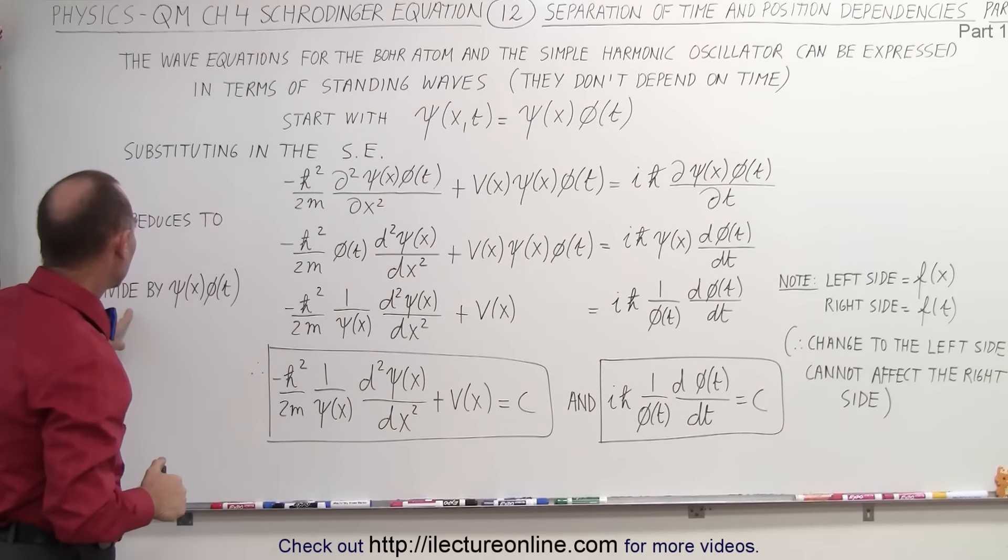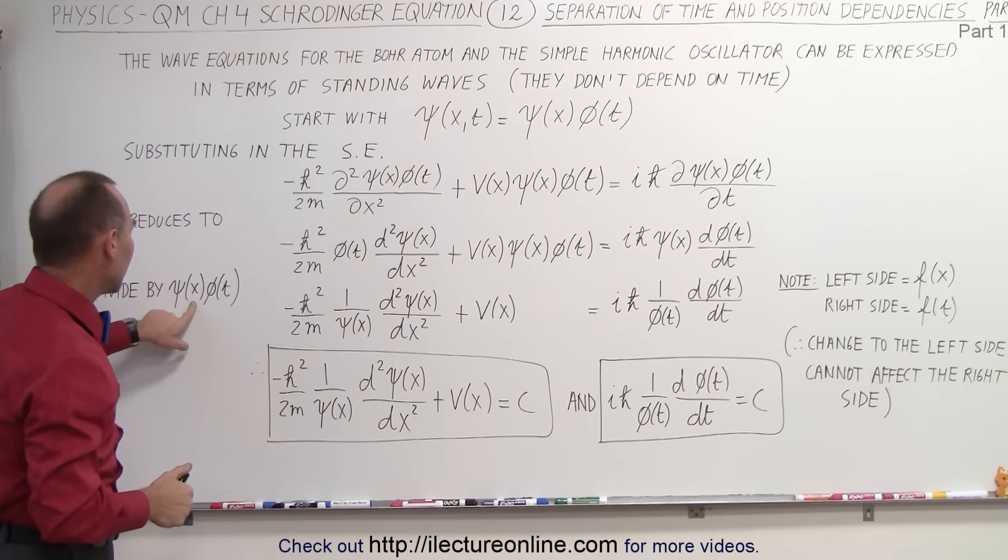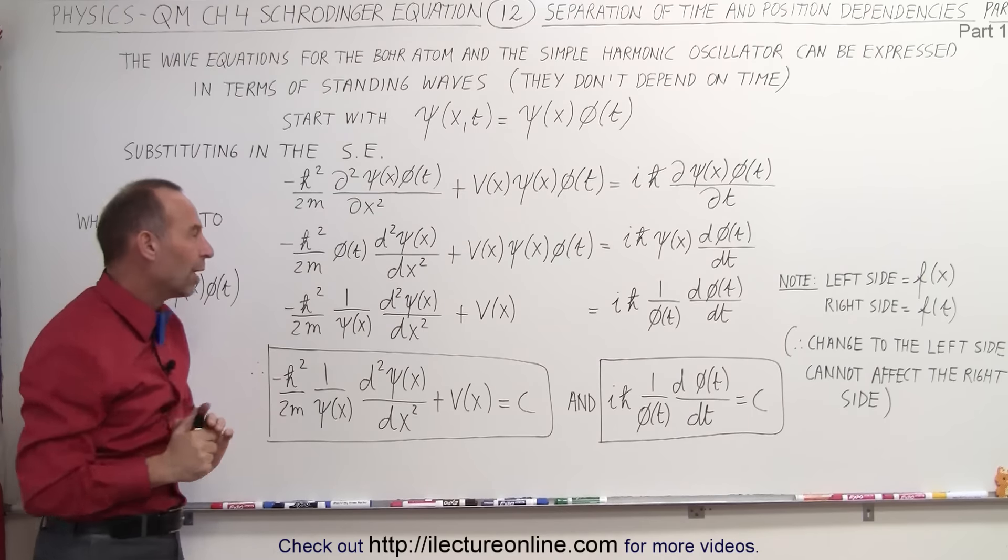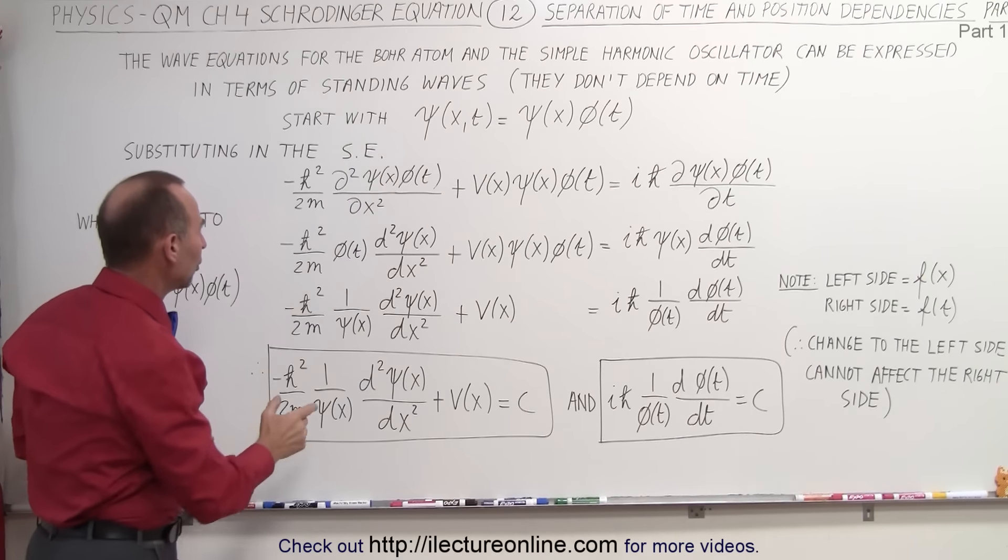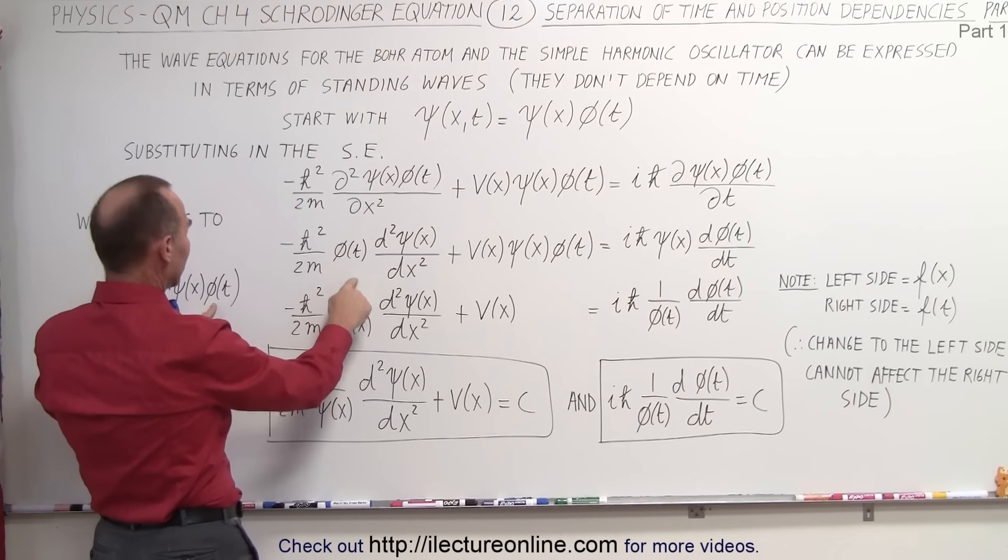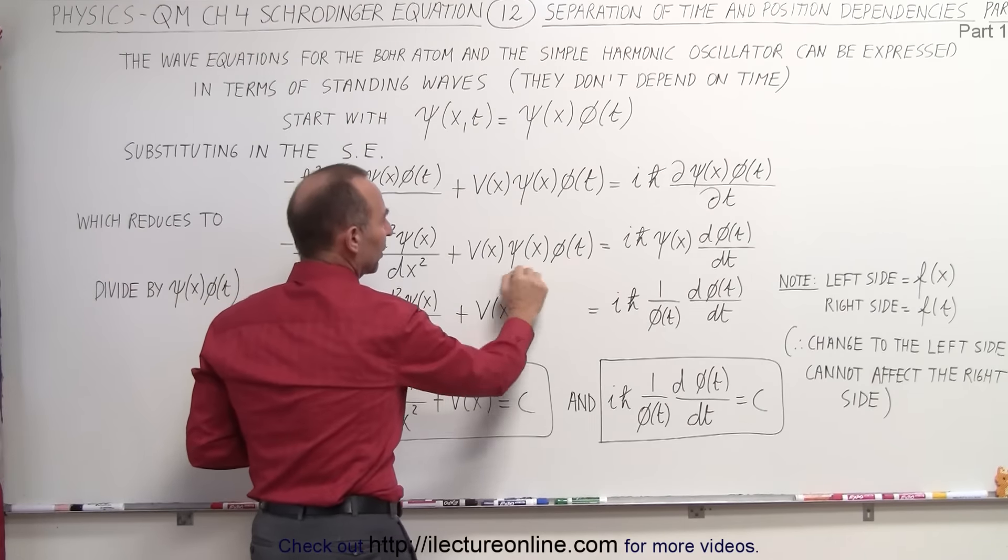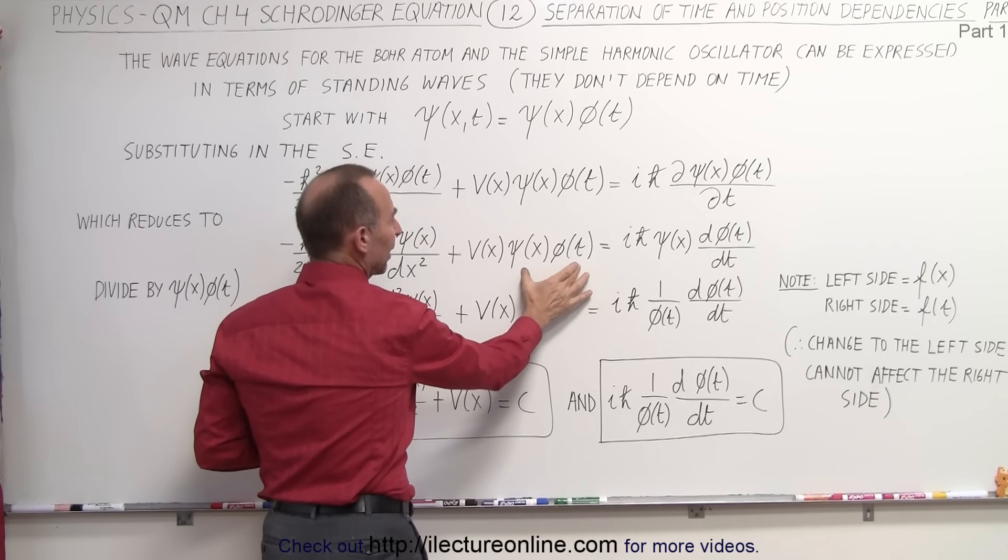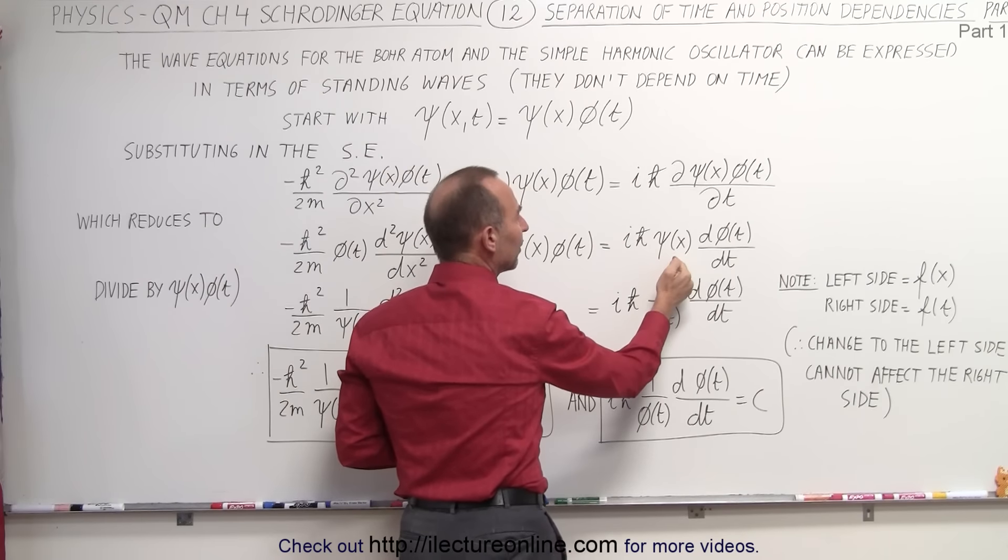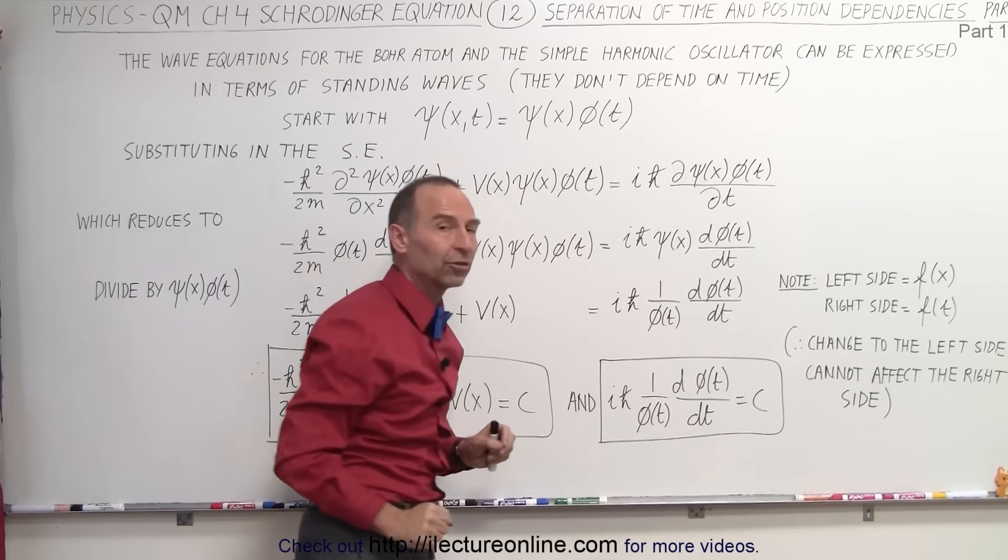Next, what we're going to do is divide both sides of the equation by the product of the wave function dependent on position and the wave function dependent on time. There's a reason why we're doing that. If we do that, notice on the left side, this disappears because we divide by this function, and then we end up with this in the denominator. Over here, they both disappear because we're dividing by both of these functions. On the right side, this disappears because we're dividing by the position-dependent wave function, and we end up with the time-dependent wave function in the denominator.